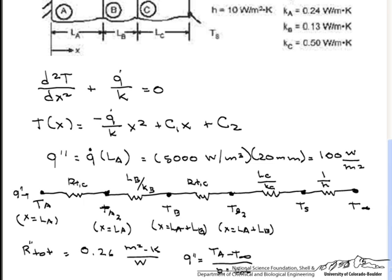And what we are really looking for is TA. We have q double prime. We have our T infinity, which is 20 degrees. And we have our R total. So that allows us to find TA, which equals 46 degrees C.